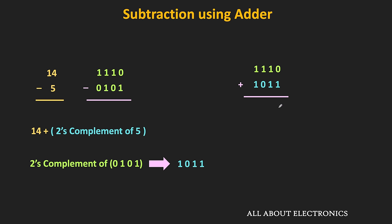So 0 plus 1 is equal to 1. Then in the next column, 1 plus 1 is equal to 0 while the carry is equal to 1. Then in the next column, 1 plus 1 is equal to 0 and the carry is equal to 1. In this 2's complement form of addition, we will ignore the outgoing carry, and the remaining number is our result — that is equal to 1001. In decimal, 1001 is equal to 9, and that is our correct result. In this way, by using the 2's complement method, we can easily convert the subtraction into addition.